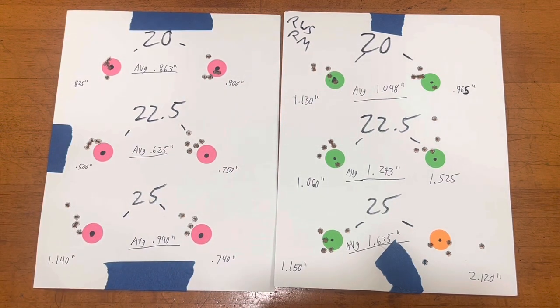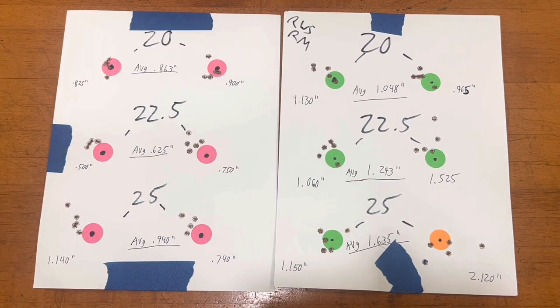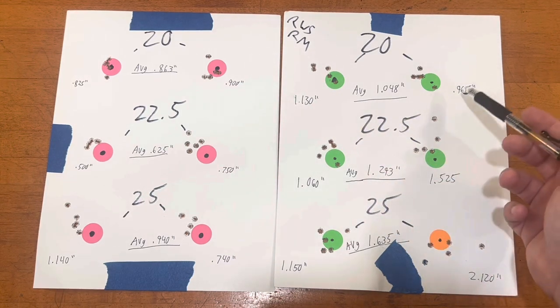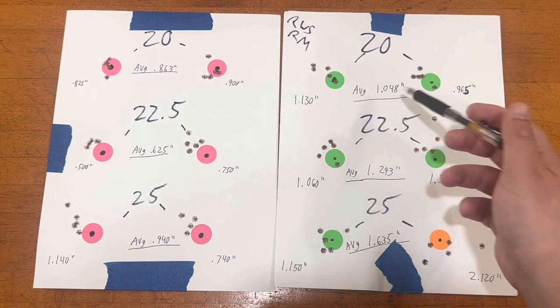Moving to 20 inch-pounds, with the Hogue overmold we shot a group in the eights and a group at nine-tenths of an inch. On the KRG Bravo we shot a group just over an inch at 1.1 and a group just shy of an inch at 0.965. So again, our average is over an inch here where our average with the Hogue is in the eights.